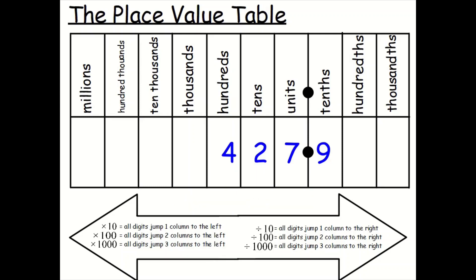What about multiplying by 100? Let's take this number and multiply it by 100. 4.279 multiplied by 100. What does it say here? If you're multiplying by 100, all digits jump two columns to the left. So two columns. One, two. And we get that our answer is 427.9. That's our answer when we multiply it by 100.